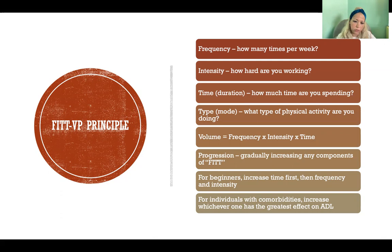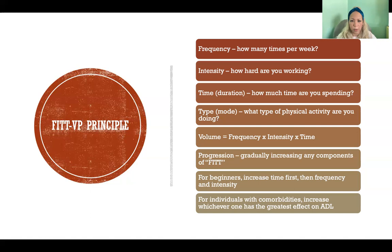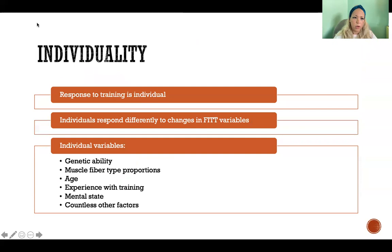Although for beginners we might generally increase time first, if somebody's goal is to walk up the stairs — maybe they can't because of pain or cardiovascular inadequacy — then rather than increasing time, you might work on increasing intensity until they're able to walk up a flight of stairs. So you would tweak whichever variable is going to help the person achieve their specific goals.